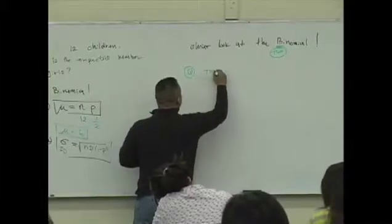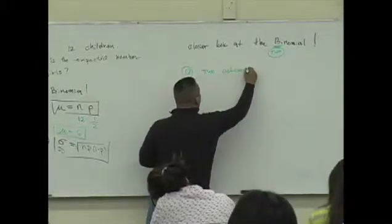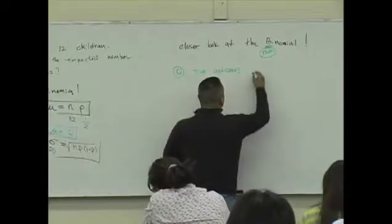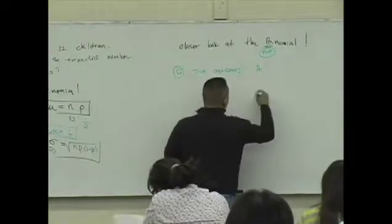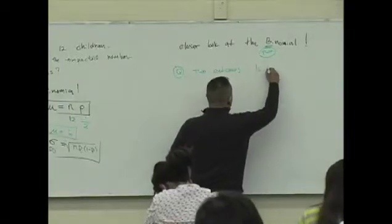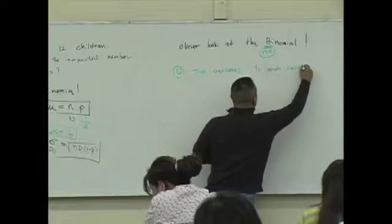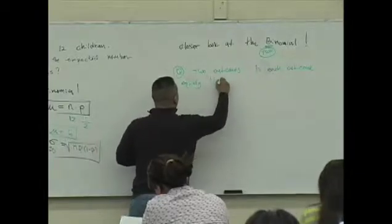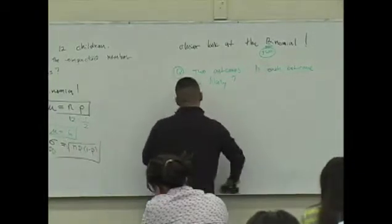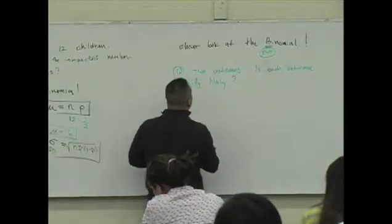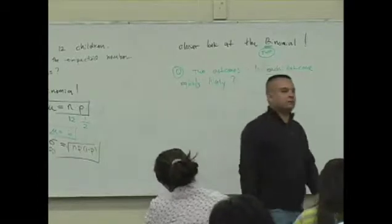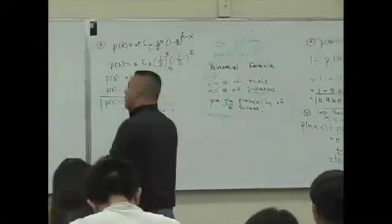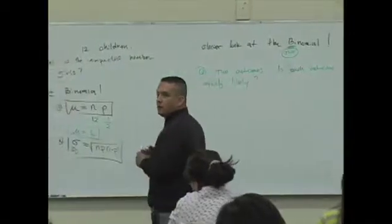It means you have two outcomes. So here's my question to you. Here's the big question. When you have two outcomes, for the two outcome situation, is each outcome equally likely? Are they equally likely? What does that mean?